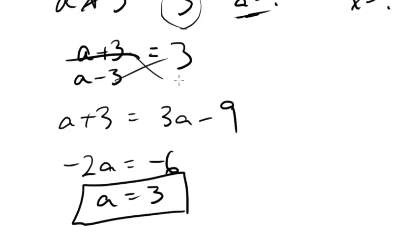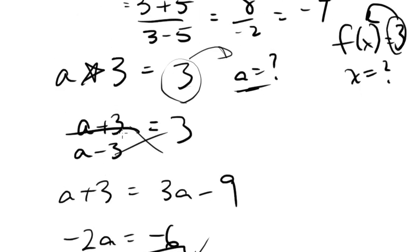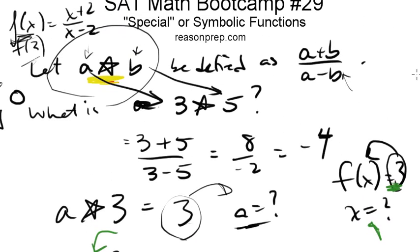The point is that we're going to get some number for a that's going to depend on what numbers we have as the output. So we're given the output in this case, which is 3, and we have to find the input. Just like we're given here the output, and we've got to find the input. So I hope in this video I proved to you that these kind of special or symbolic or weird functions, whatever you want to call them, are just like your f(x) problems. They're just using different symbols and trying to confuse you.